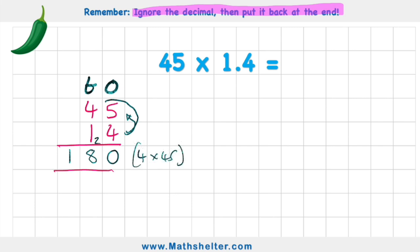Now I'll do the next smallest value, which is this one in the tens column. I'm going to answer one times five, but remember this is not just a one — it's actually a 10 because it's in the tens column. So my question is 10 times 45. To make my question 10 times bigger I'm going to put a zero in here as a placeholder and then just answer one times five.